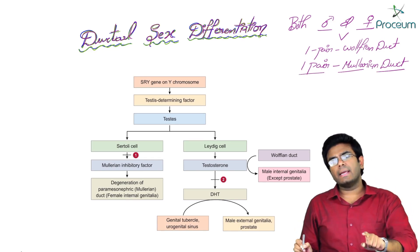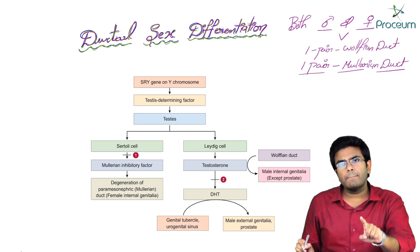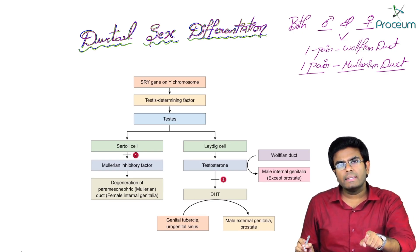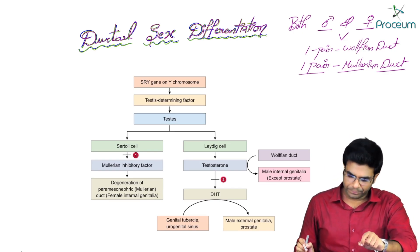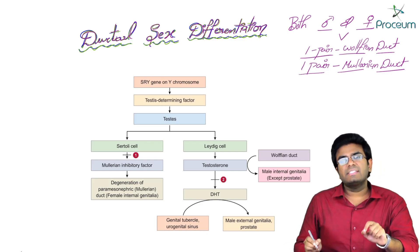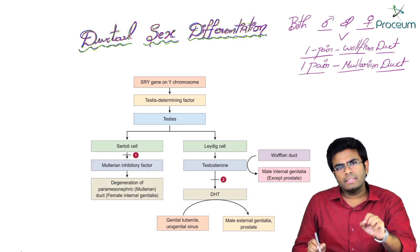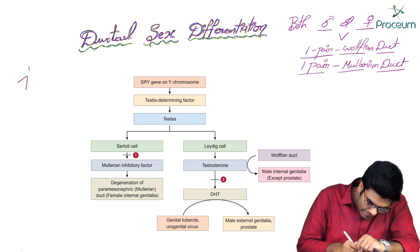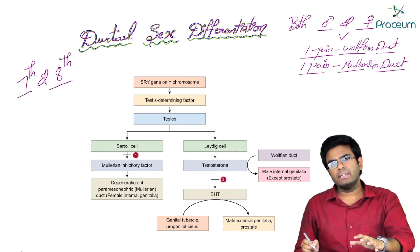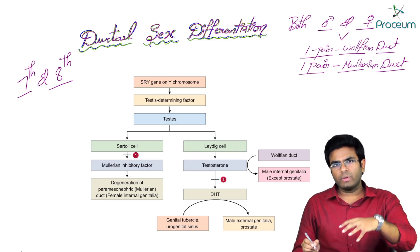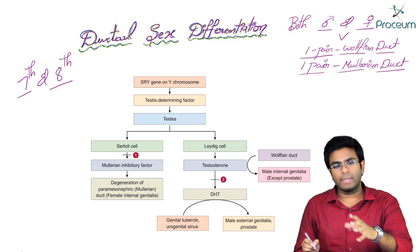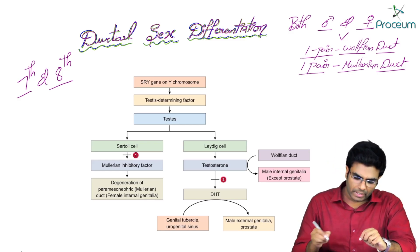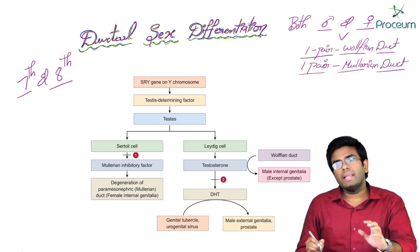This means a Mullerian duct is even present in the male embryo, and Wolffian duct during gestation is even present in a female embryo. The timeline of events we are going to discuss are happening during the seventh and eighth week.